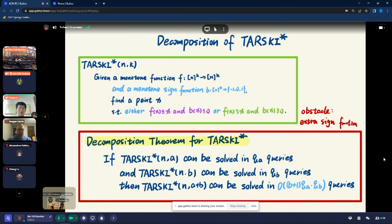Our main technical theorem is a new decomposition theorem for Tarski star, which states that if an A-dimensional Tarski star can be solved in Q_A queries and B-dimensional Tarski star can be solved in Q_B queries, then A plus B-dimensional Tarski star can be solved in the order of B plus one times Q_A times Q_B queries. The main obstacle is that we have an extra sign function and this function can take values of plus, minus one, and zero. All these rows are different and we need to carefully work for it.